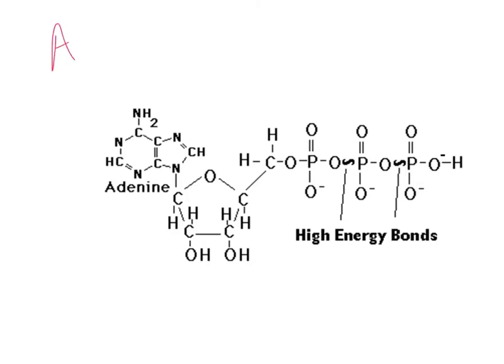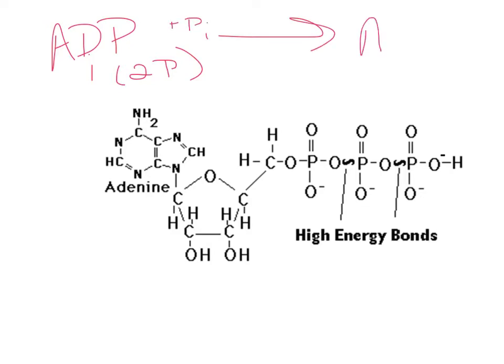Most organisms have molecules of ADP — adenosine diphosphate — which only has two phosphates attached. When we add an inorganic phosphate to ADP, you get ATP, your triphosphate. ATP is relatively unstable, so it's only used for short-term energy. Its energy is stored in its electron configuration — how the electrons are arranged.